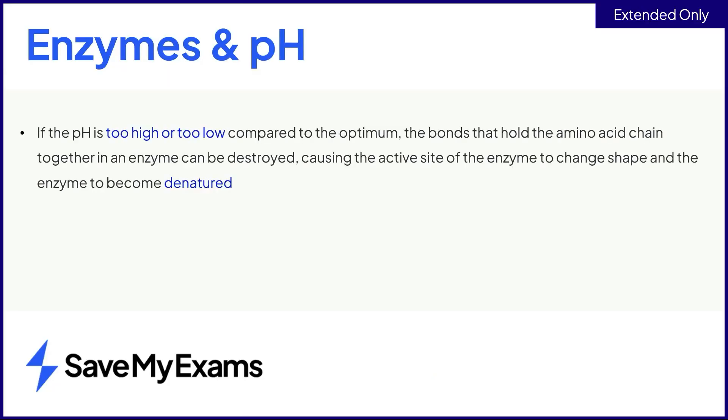In summary, the structure of an enzyme is held in place by bonds that are affected by changes in pH. When the pH becomes too high or low in comparison to the optimum, it causes the bonds holding the enzyme structure together to break, changing the shape of the active site and preventing it from being able to bind to the substrate. The enzyme is denatured.